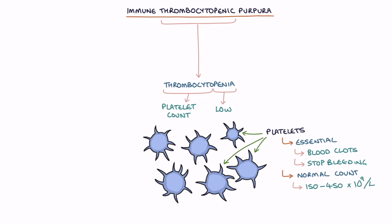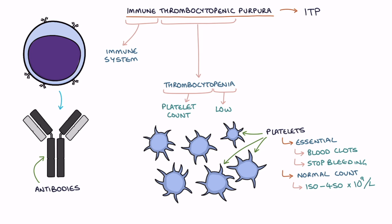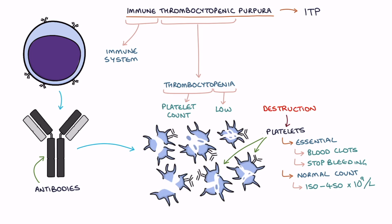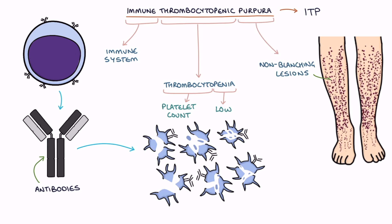Immune thrombocytopenic purpura, abbreviated to ITP, is a condition where the immune system produces antibodies against platelets. Antibodies against platelets leads to the destruction of the platelets, causing a low platelet count. It characteristically presents with purpura, which are non-blanching lesions caused by bleeding under the skin.